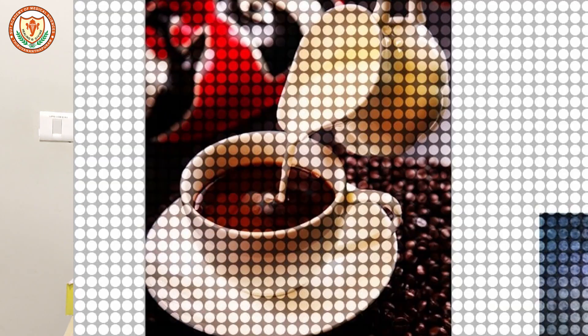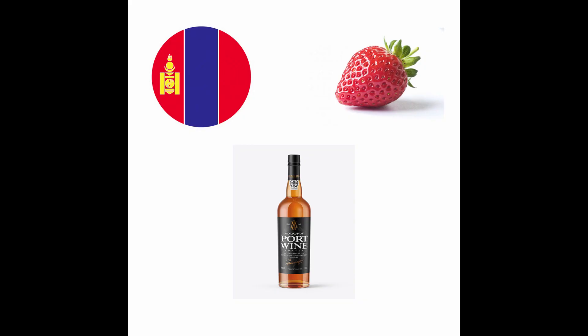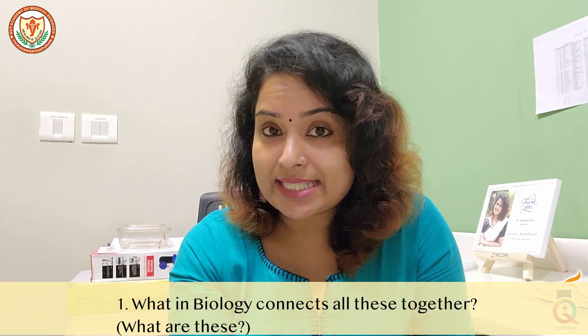Question number one: In the picture given below you are seeing coffee served with milk. I'm adding a fruit, a country, and then a type of wine. So we are having coffee served with milk, a country, a fruit, and some type of wine. Just tell me which field of biology connects all these things together.